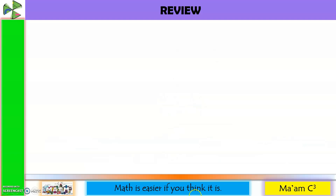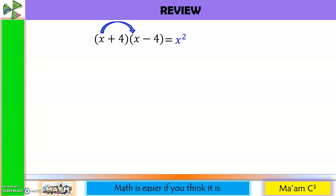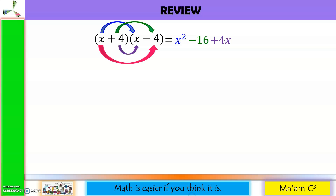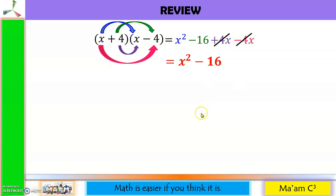Let's have a quick review on how to get the product of two binomials. I will use a smile method here. x times x is x squared. Positive 4 times negative 4 is negative 16. Positive 4 times positive x is positive 4x, and positive x times negative 4 is negative 4x. Positive 4x and negative 4x will simply cancel out, so our final answer is x squared minus 16.